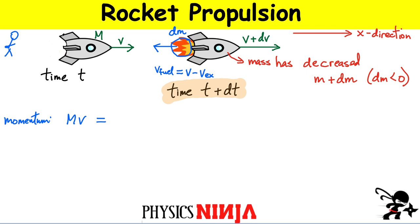That has to be equal to the momentum at any other time. So let's look at the rocket a little bit further in time at some time t plus delta t later. First of all, it's going to be moving a little bit faster. It's also going to have a little bit less mass, because it's burnt up some of the fuel and ejected some of it out of the back of the rocket. So I'm going to write this as m plus delta m. If the mass actually decreases, it means that delta m has to be less than zero, so the mass at this time is going to be a little bit less than the initial mass. Let me just use lowercase m to keep the notation clean.